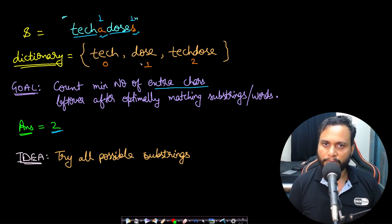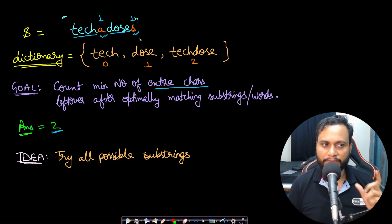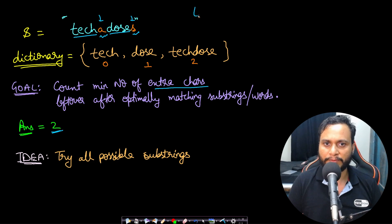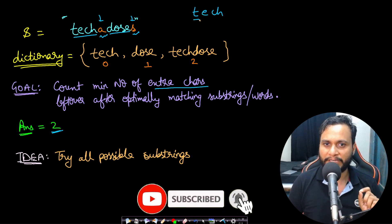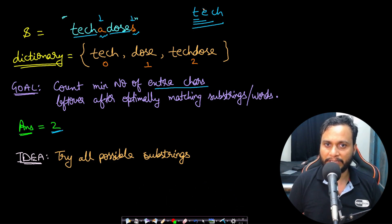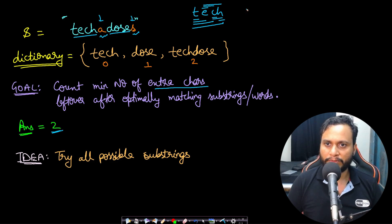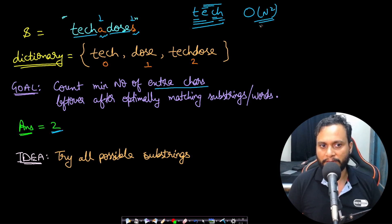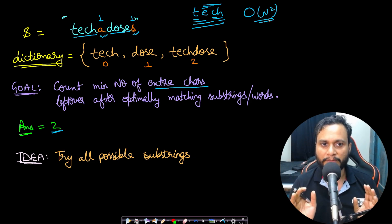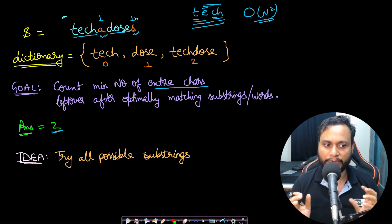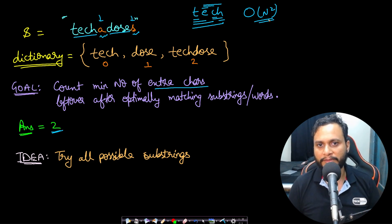The idea is very simple — we will try all possible substrings of the given string. For example, if the given string is 'Tech', all possible substrings starting with T are: T, TE, TEC, TECH; starting with E: E, EC, ECH; starting with C: C, CH; and starting with H: H. The total number of substrings is O(n²), and we need to try each of them and match against the dictionary to minimize the number of characters removed.